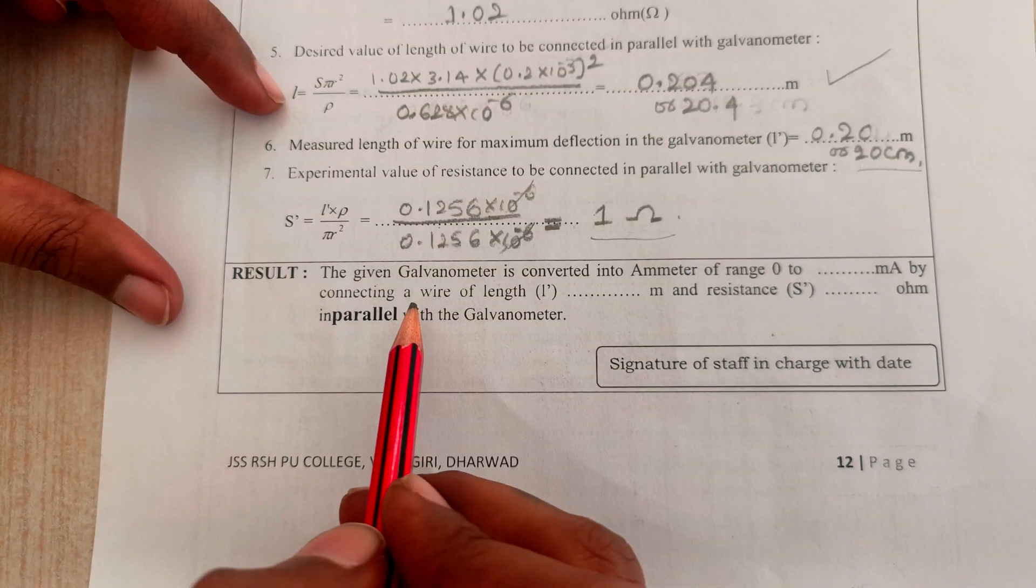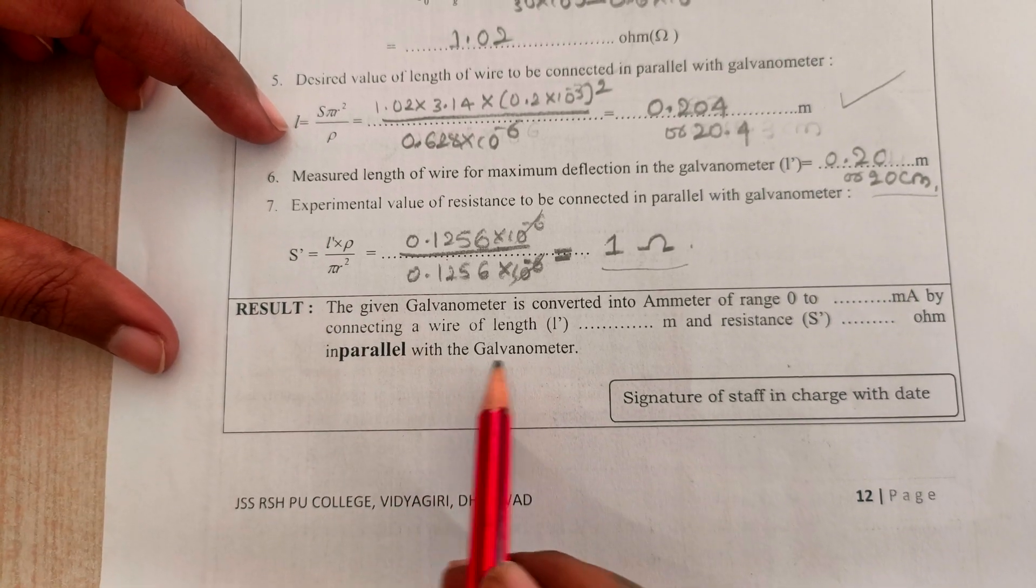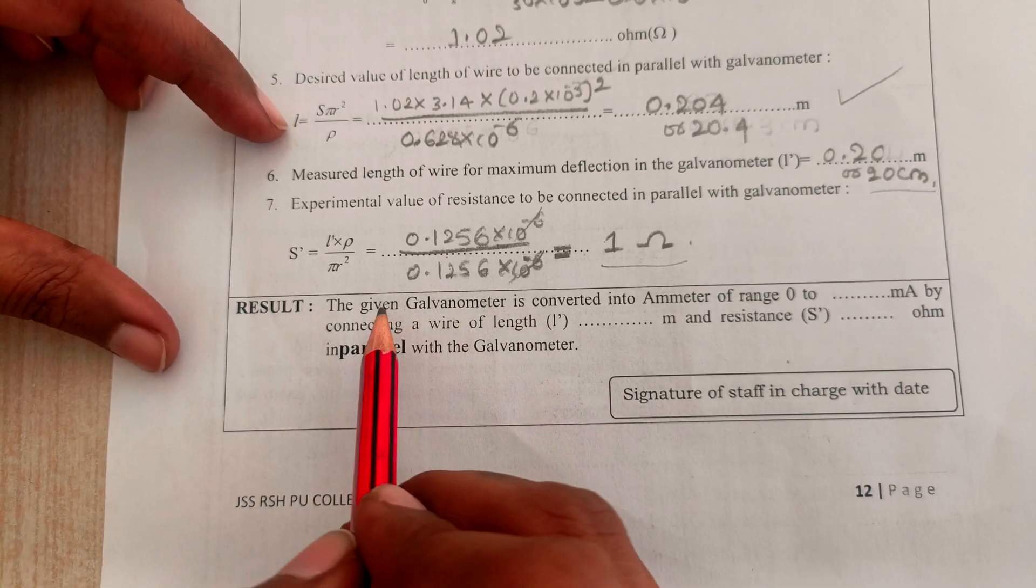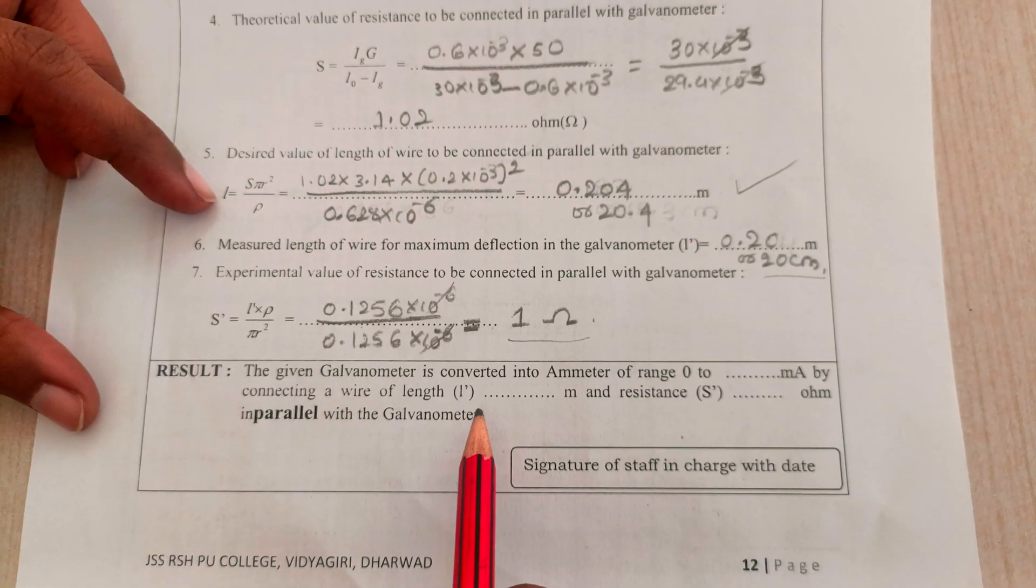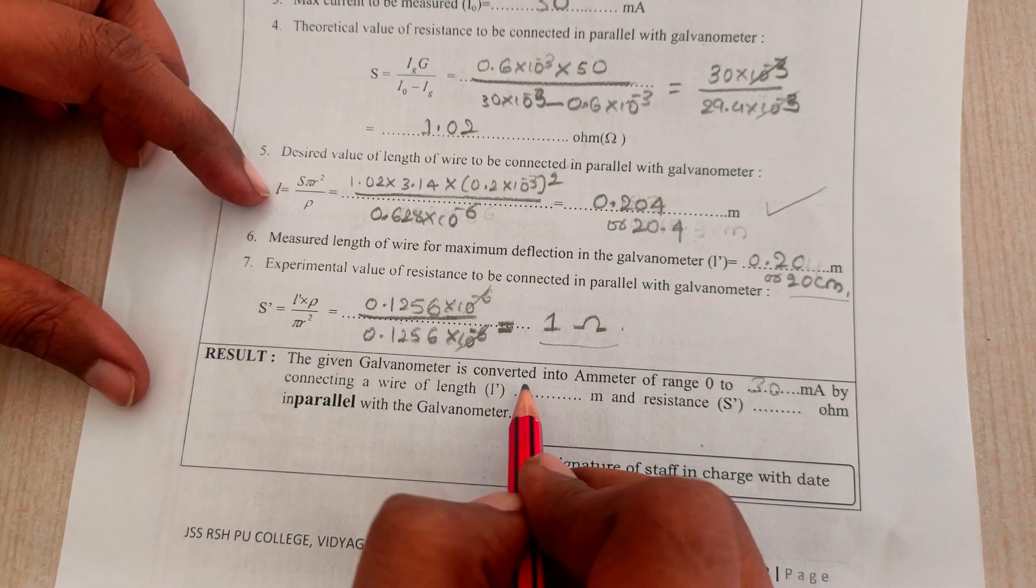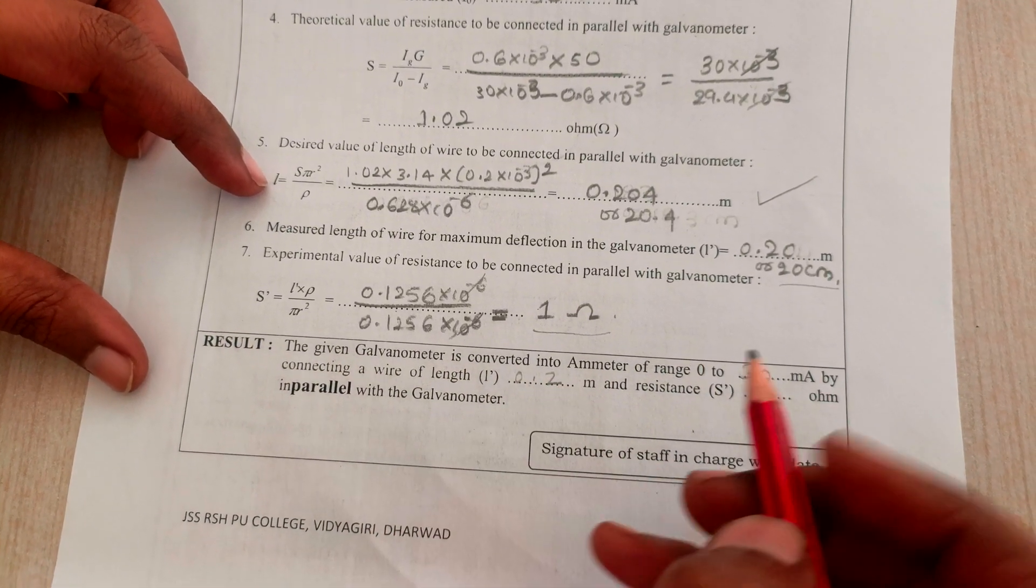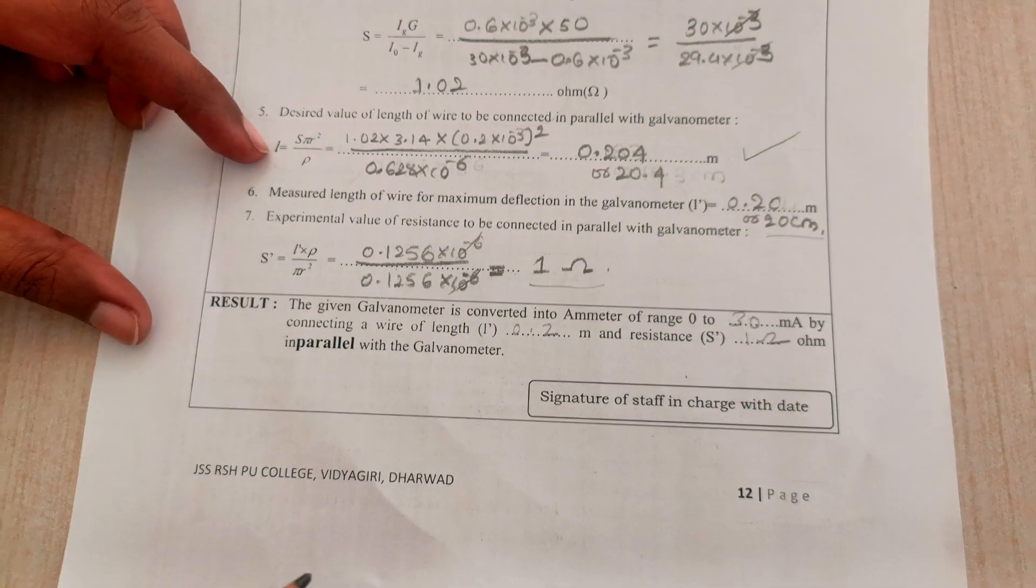This is how we are going to do the experiment. We are converting the given galvanometer into ammeter using the range 0 to 30 milliamps by connecting a length of 0.2 meters and the resistance is 1 ohm. This is how the experiment is done.